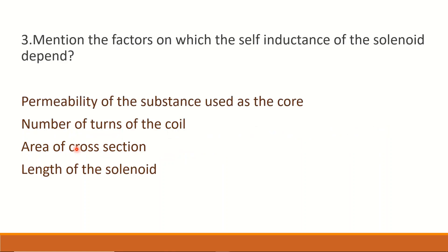Third question: Mention the factors on which self-inductance of a solenoid depends. The self-inductance equation is L = μ₀ μᵣ n² A / l. That means self-inductance depends on: the permeability of the substance used as core, the number of turns of the coil, the area of cross-section, and the length of the solenoid.